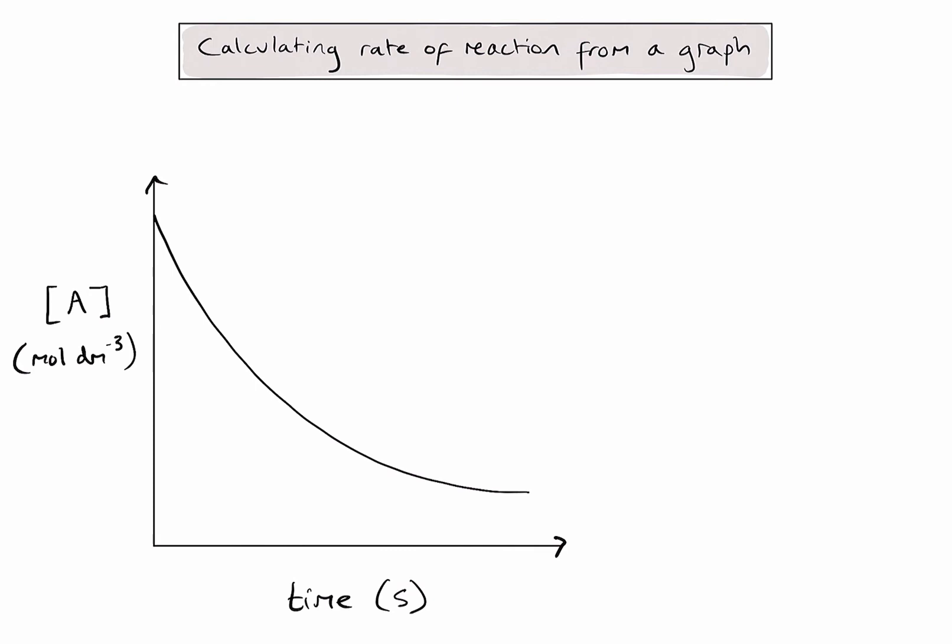In order to calculate the rate of reaction at a specific time in my reaction, we need to consider how the concentration of A is changing over a given period of time. And to do this, we need to draw a tangent to my line at the time at which we are considering. So let's take, for example, time equals zero, which is the very beginning of the reaction, otherwise known as the initial rate of reaction. So let's draw a tangent to the line at time equals zero.